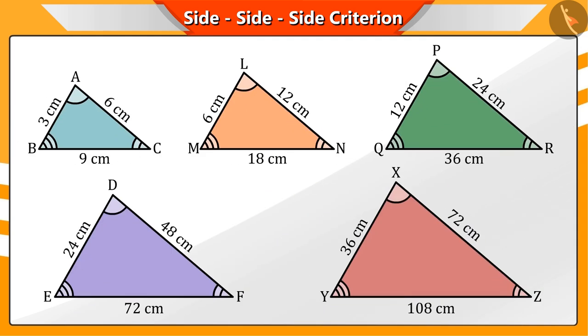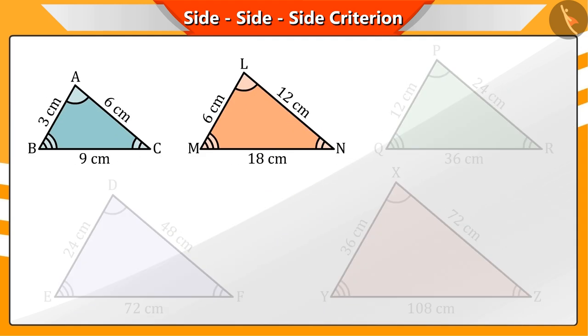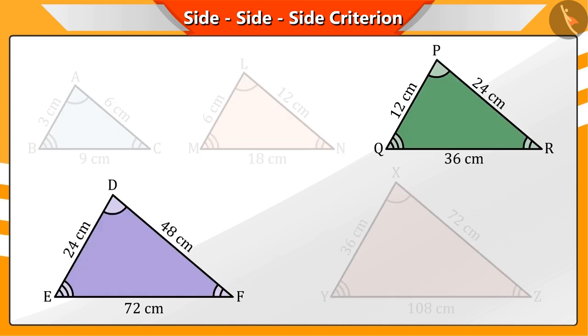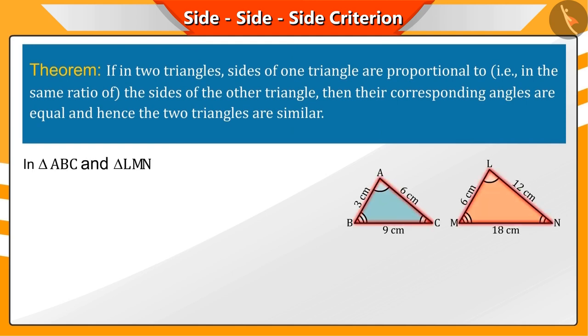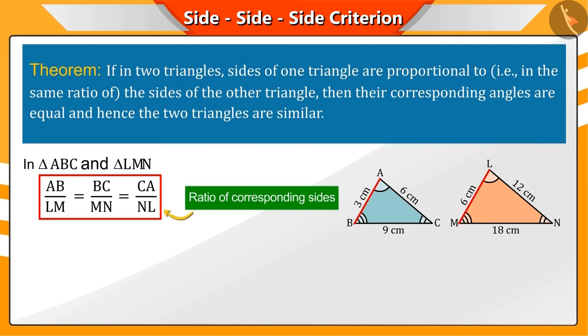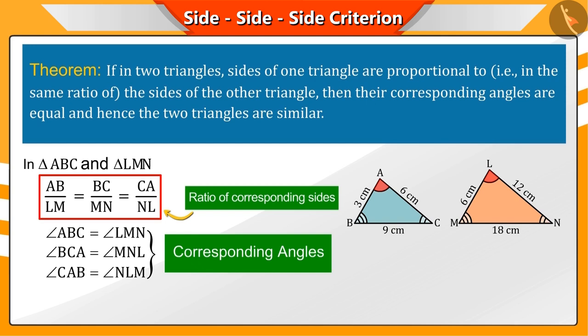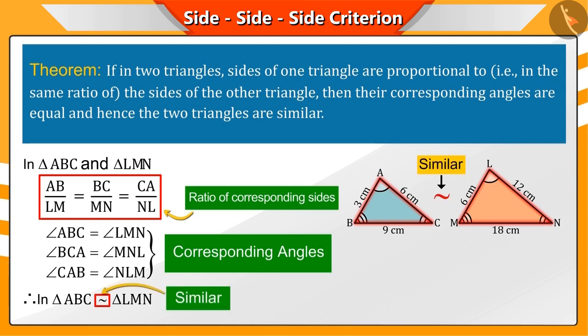Similarly, if we take any two triangles from these, then the ratios of their corresponding sides and the corresponding angles are equal. Hence, we can say that in any two triangles, if the corresponding sides are in the same ratios, then their corresponding angles will always be equal, by which we can say that they are similar triangles.